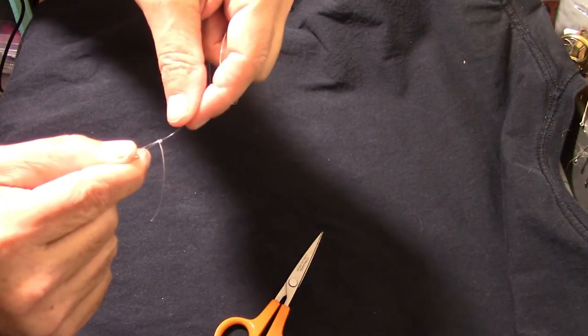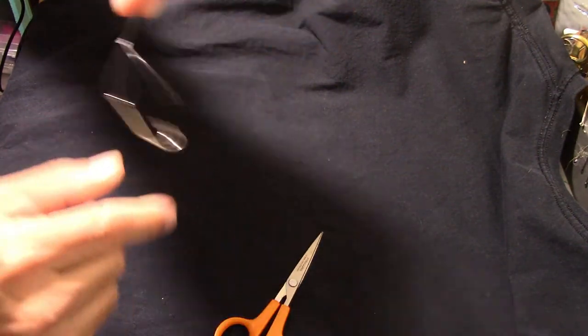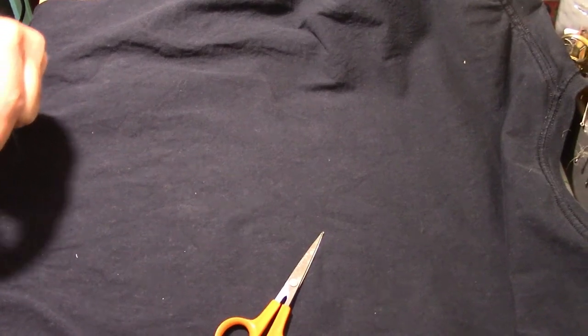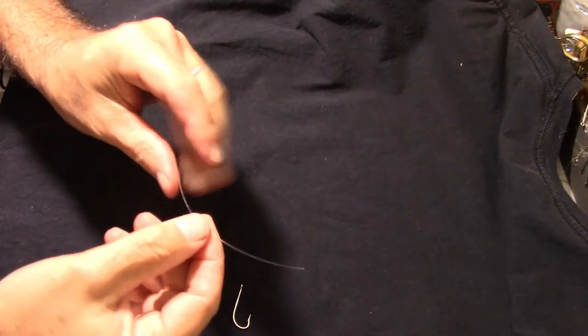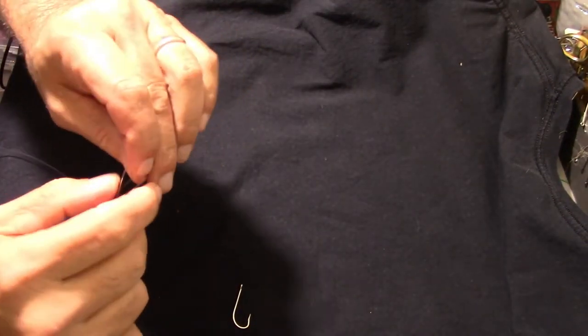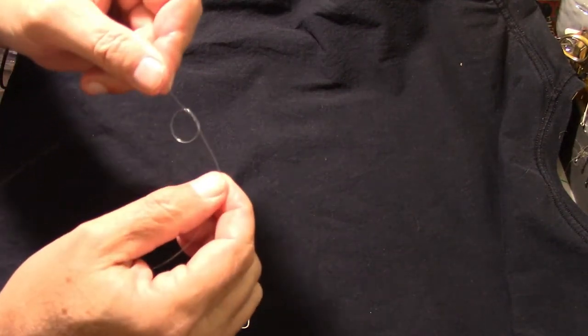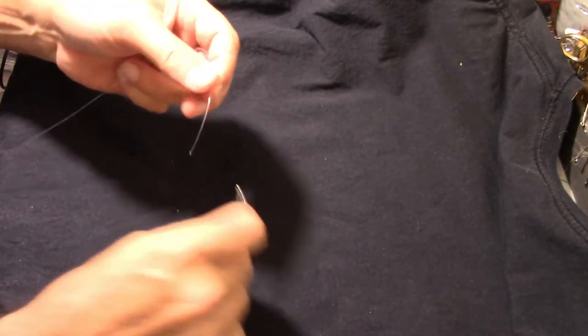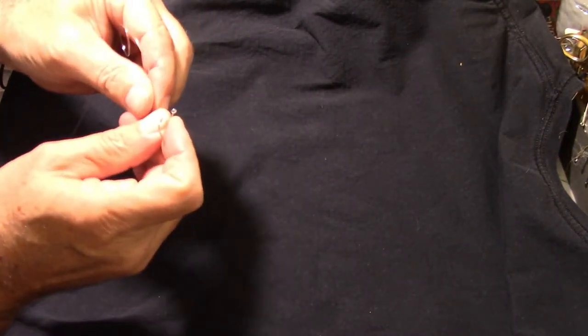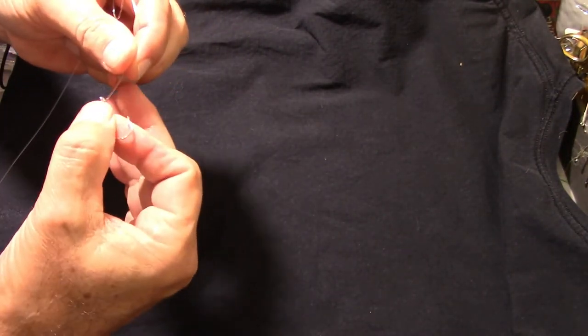Okay, this time I'm using 50 pound test. Overhand knot, leave the wraps on top, through the eye of the hook. It doesn't matter which direction.